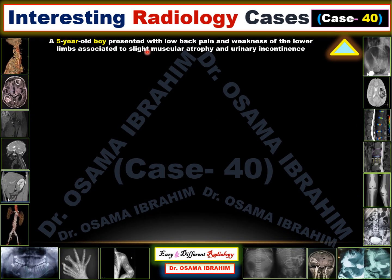Case number 40 is representing a five-year-old boy presented with low back pain and weakness of the lower limbs, associated with slight muscular atrophy and urinary incontinence.